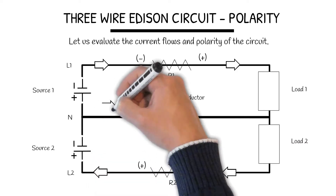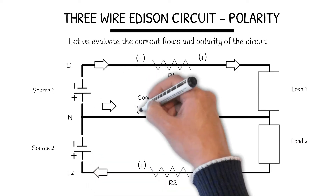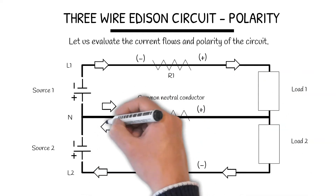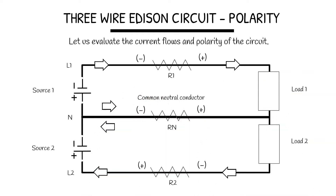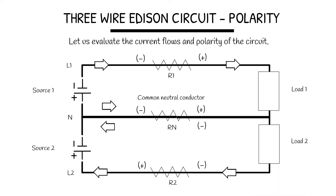The neutral conductor, however, could either be moving from left to right, which creates a negative and positive, or right to left, which creates a negative on one side and positive on the other side.